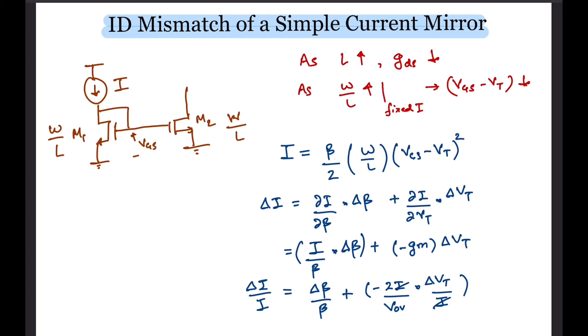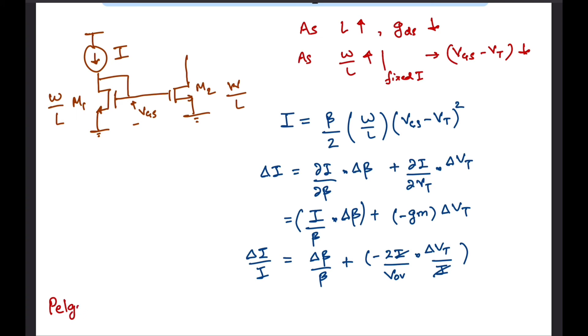If we assume sigma to be the standard deviation of the relative current distribution, then we can express that using Pelgrom's law as sigma squared equals A beta squared over WL plus 4 by VOV squared times AVT squared over WL.